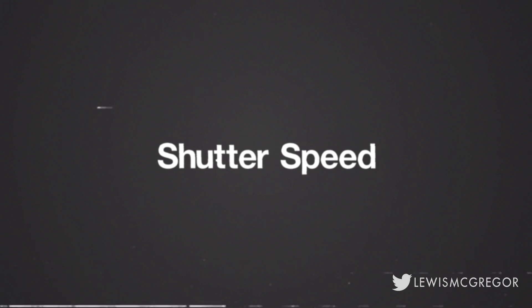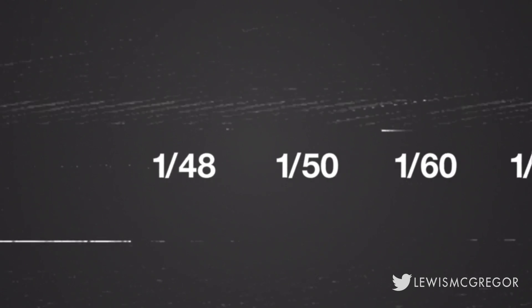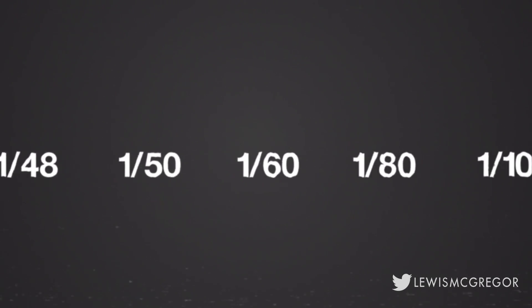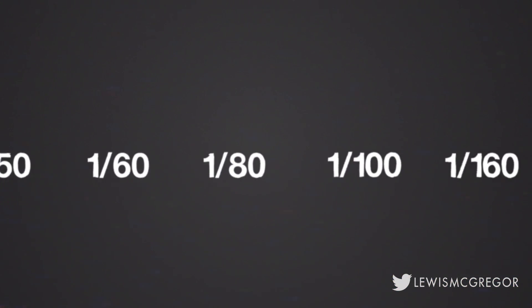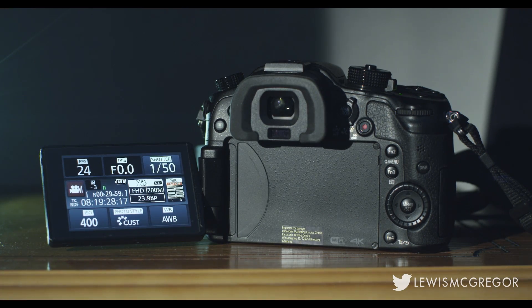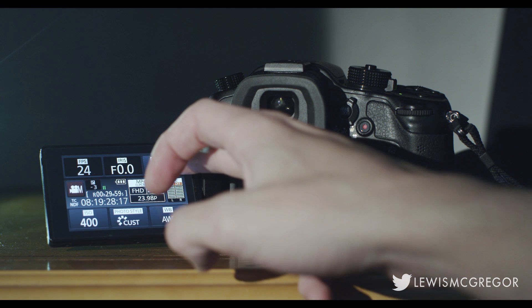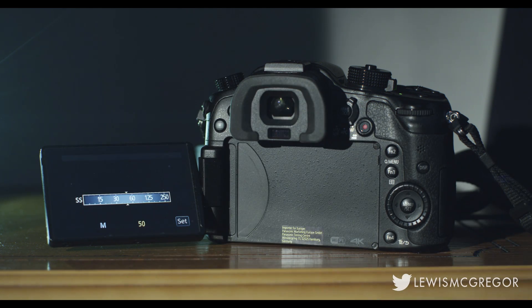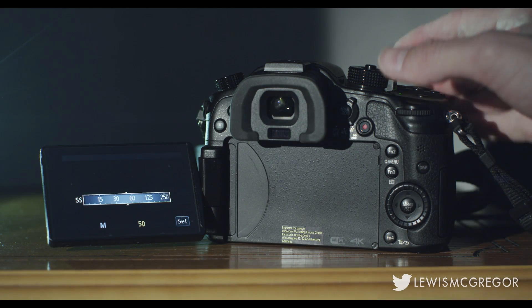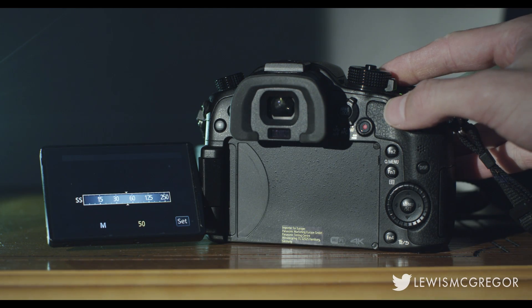Shutter speed is the term used to describe the amount of time that each individual frame is exposed for. In filmmaking, the number will always be a fraction of a second, so 1 over 50. That would mean that for 1/50th of a second, that individual frame is being exposed.